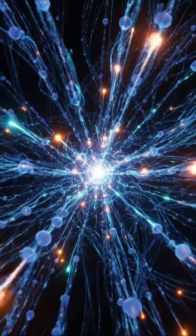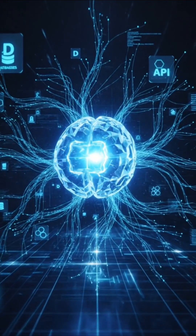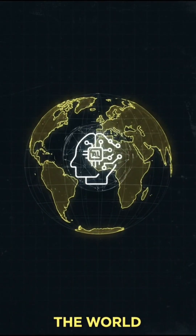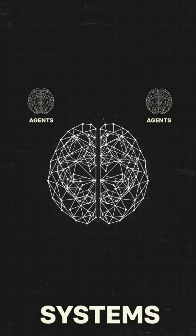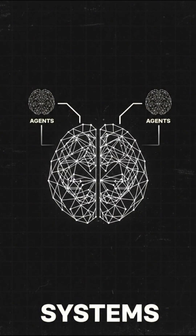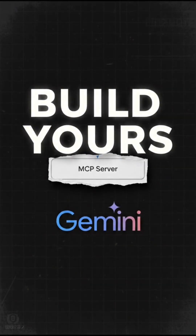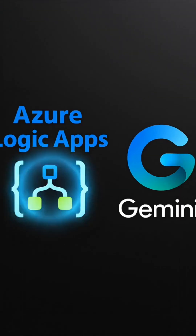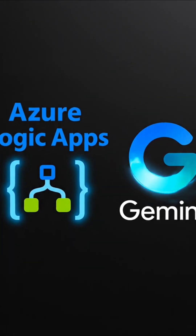A2A connects AI to AI. MCP connects AI to the world. Together, they turn intelligent agents into intelligent systems. Check out my tutorial on how to build your own MCP server using Azure Logic Apps and Google Gemini.